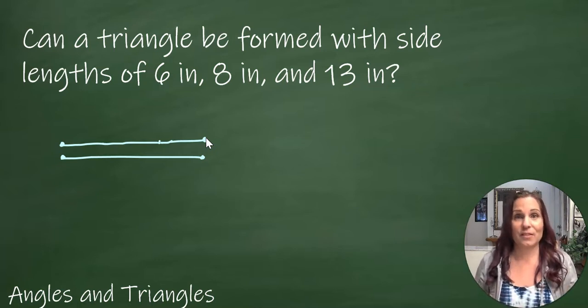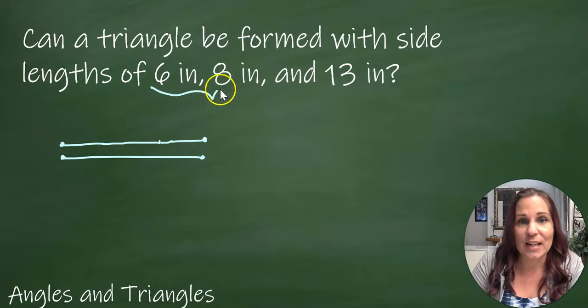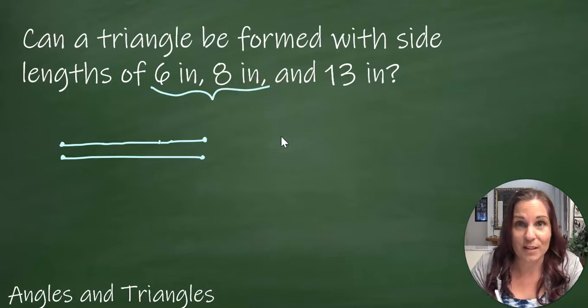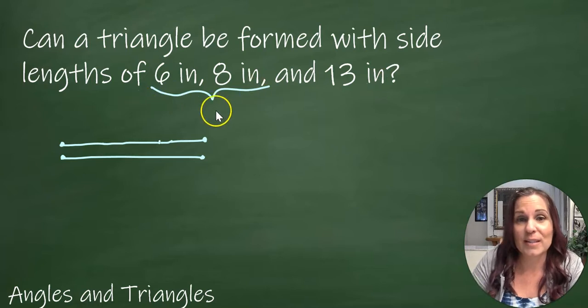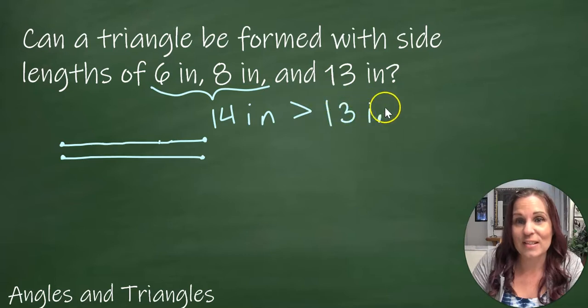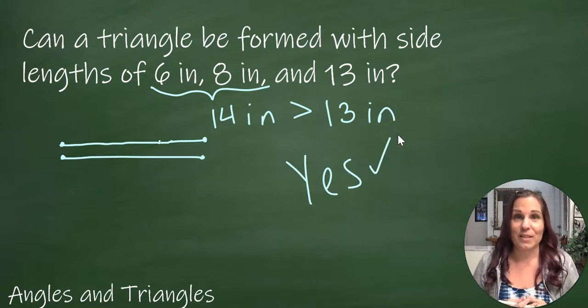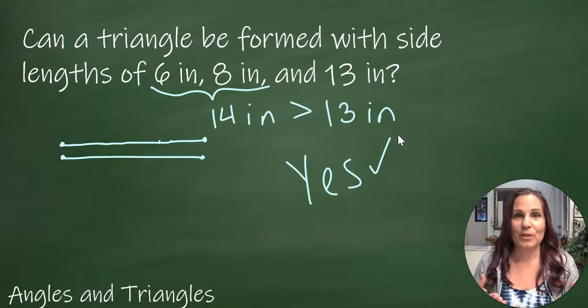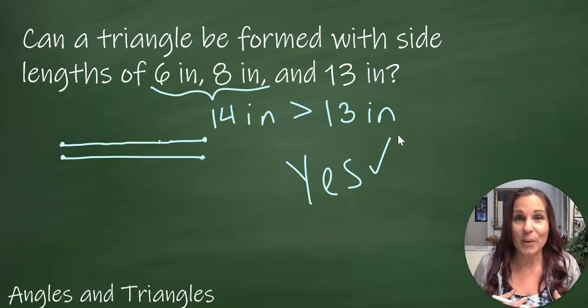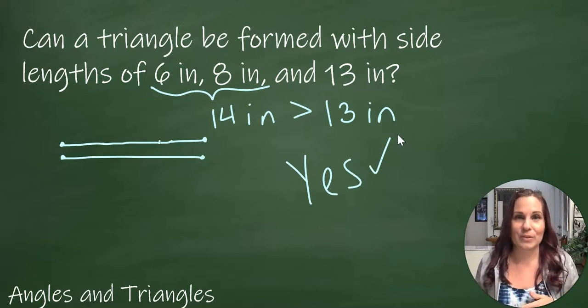So let's see if that's the case here. Six inches and eight inches are my two short sides, 13 is the longest one. Six plus eight is 14 inches. That is greater than 13 inches. So yes, I can form a triangle with these given side lengths because the two smaller side lengths have a sum that's larger than the third side.